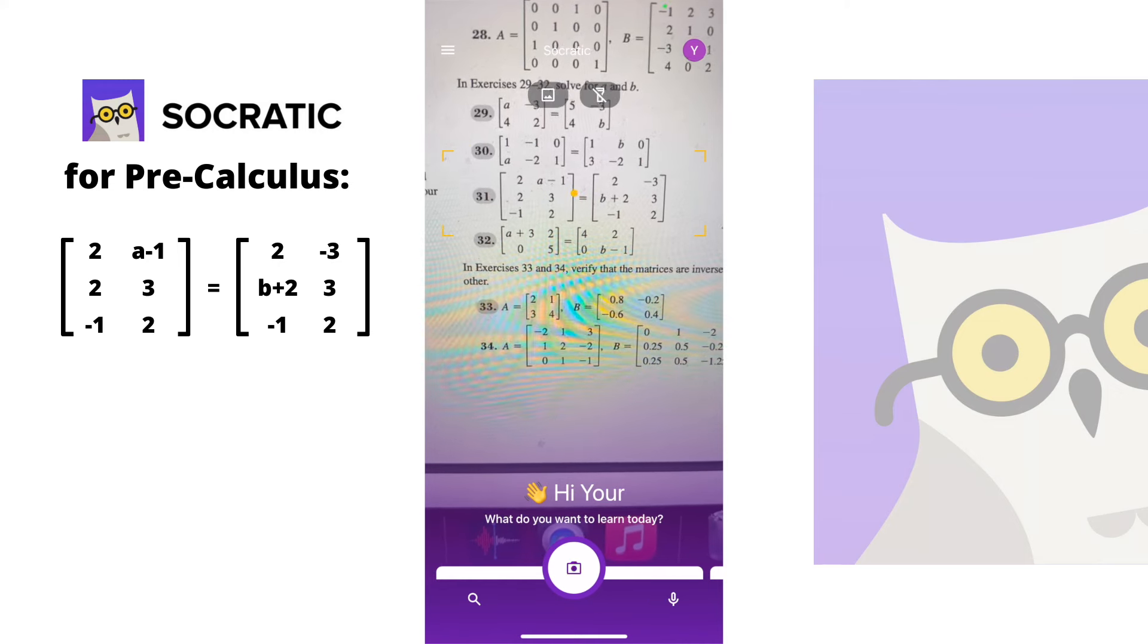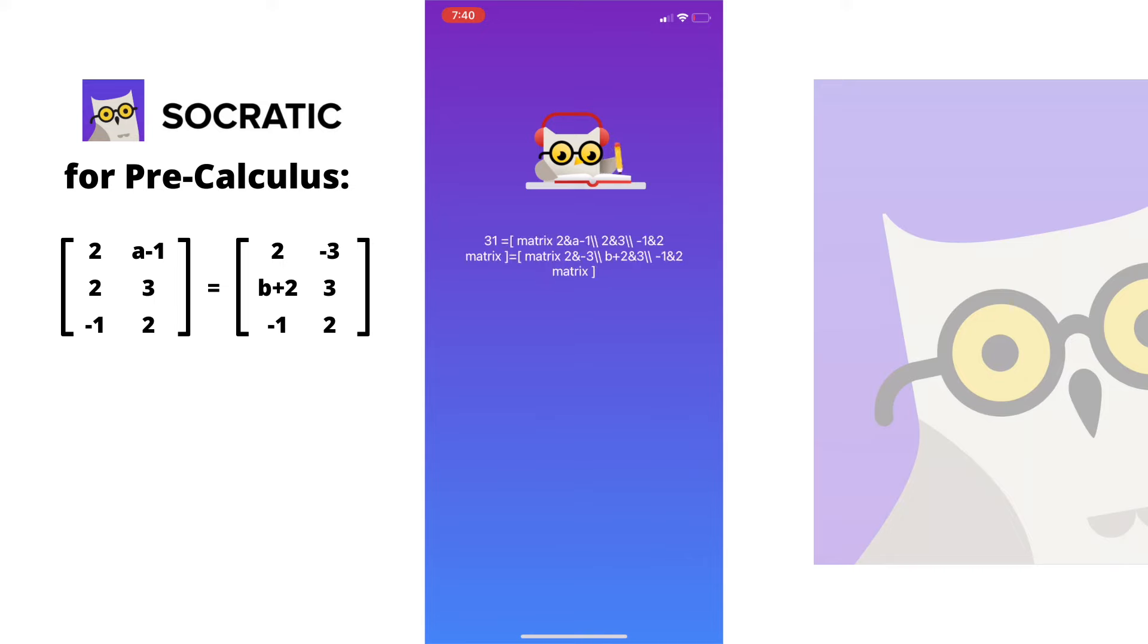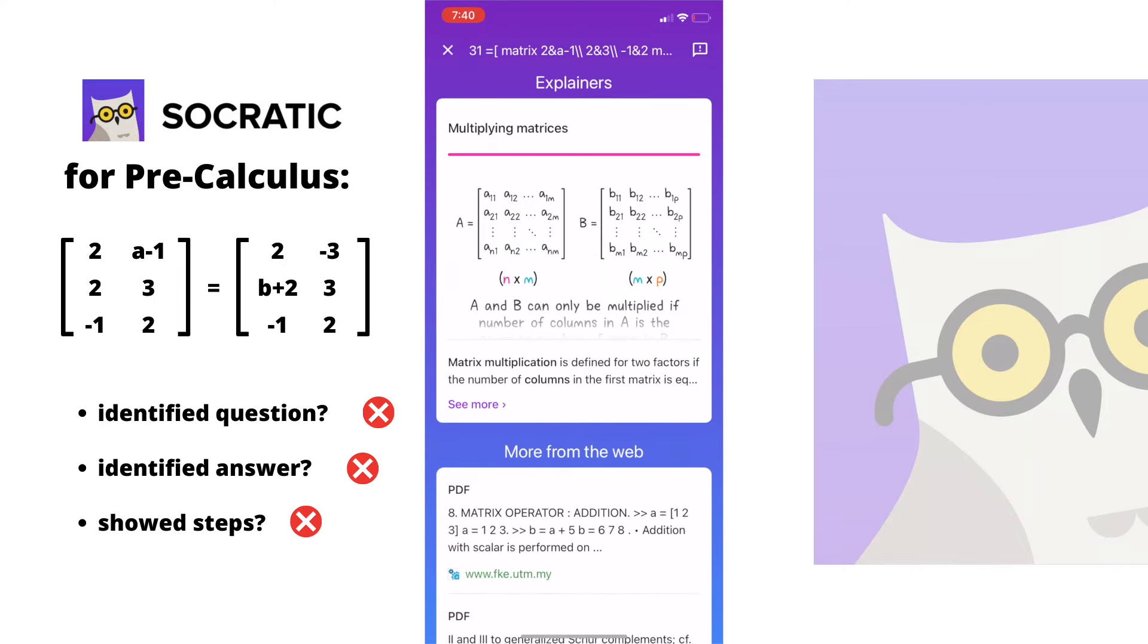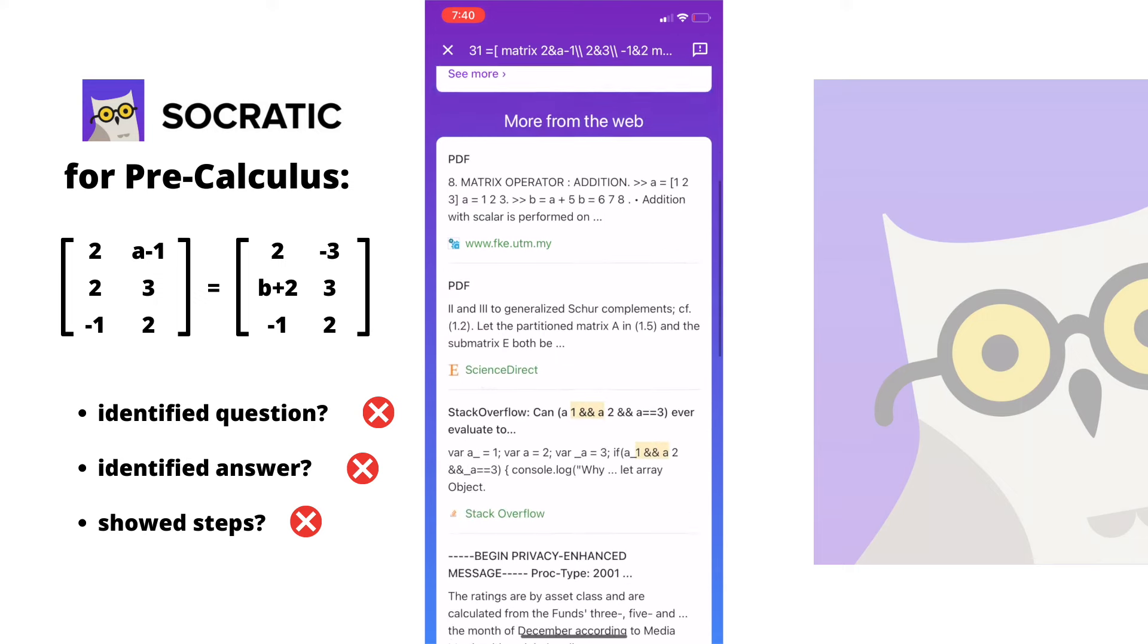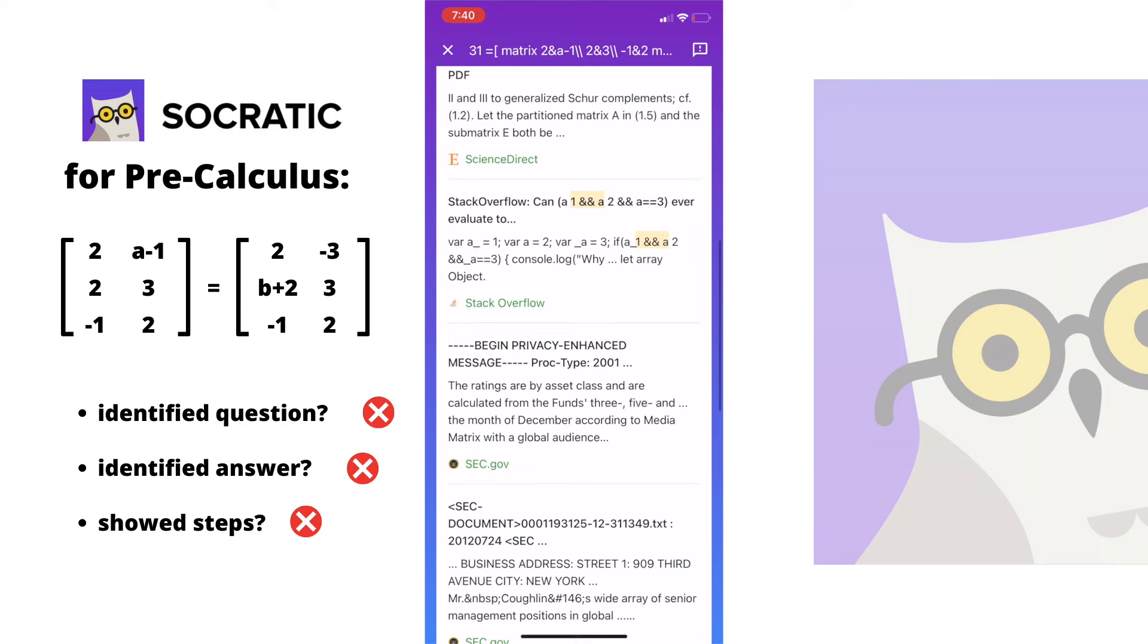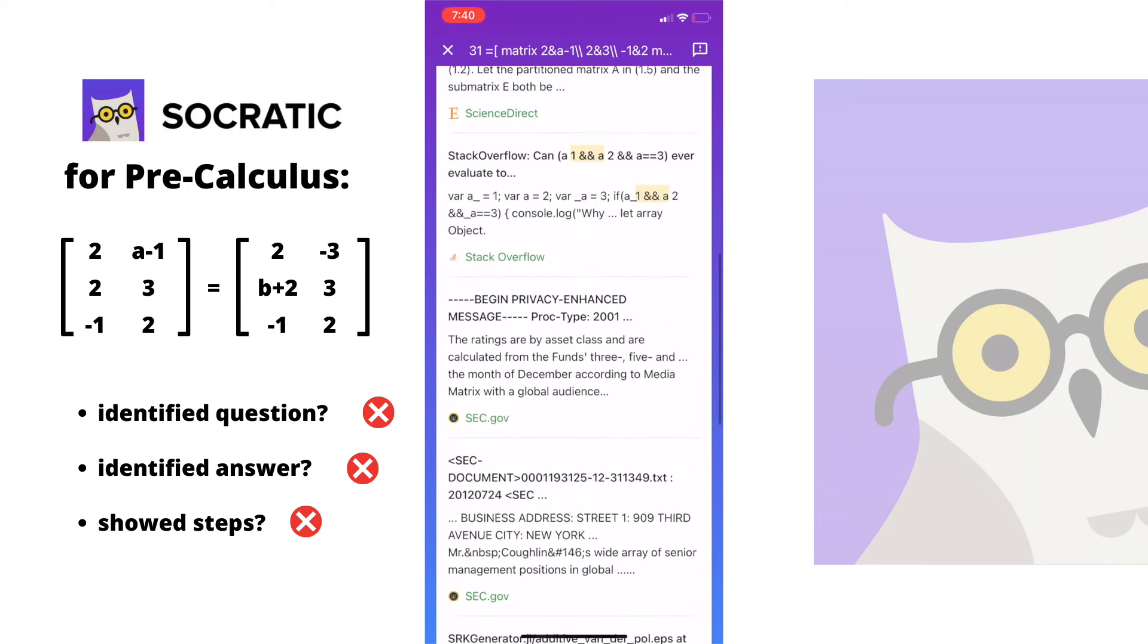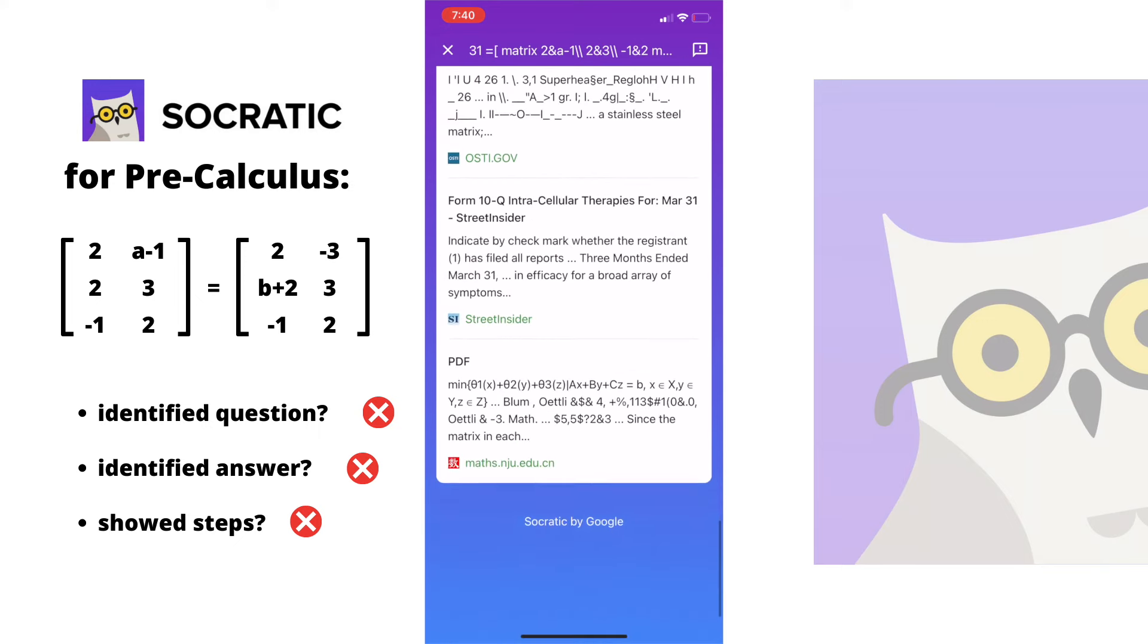Socratic actually did the worst for pre-calc because it recognized the matrices but gave me absolutely nothing. There weren't answers, but it does give you little information cards on how to find the inverse of the matrix and then how to multiply them, but it doesn't quite do what I want it to, which is actually solve the problem. So I think it's starting to fall apart at these higher level classes.